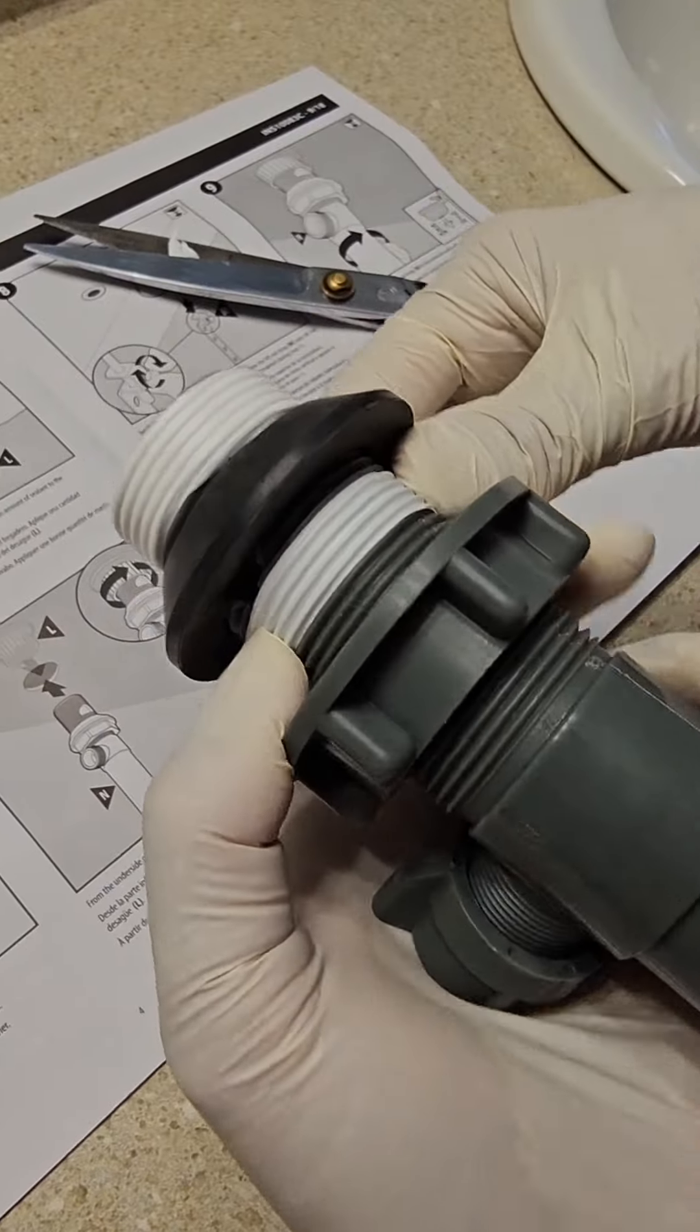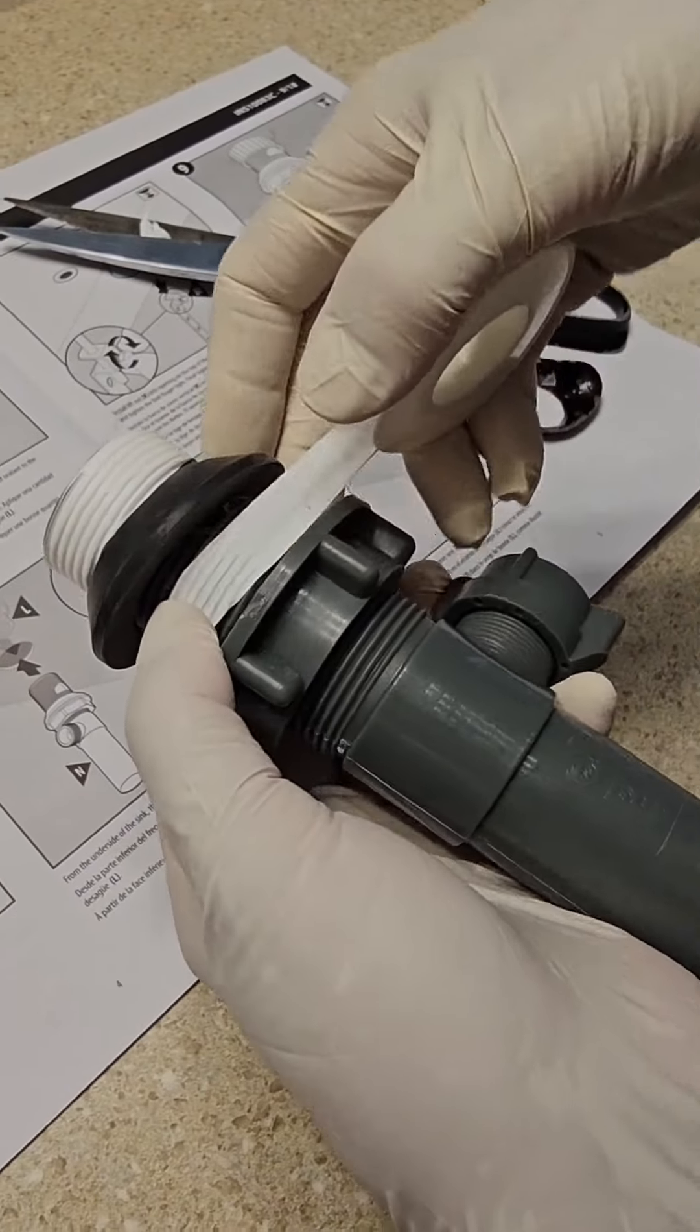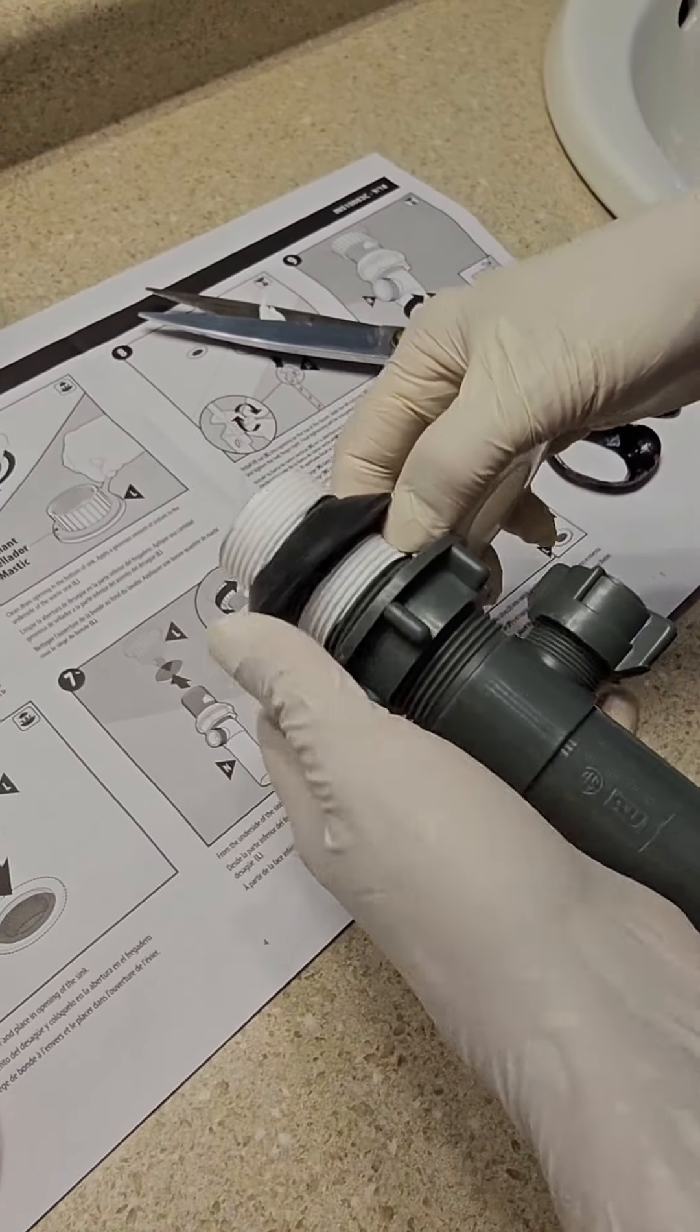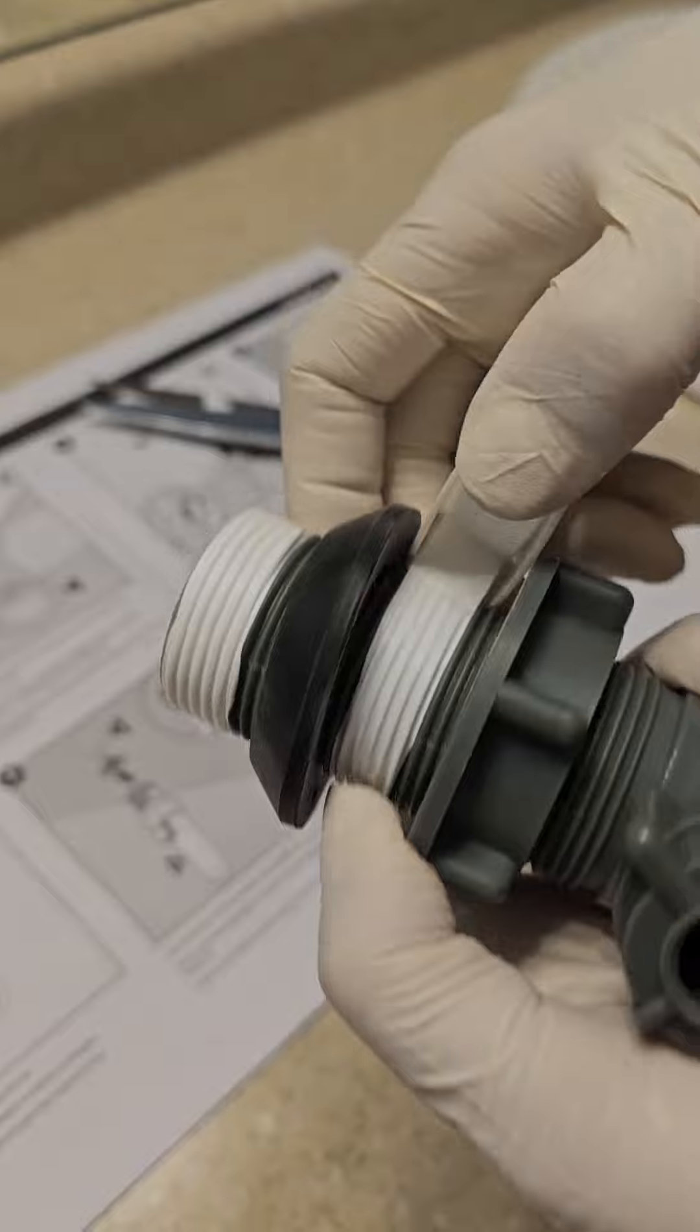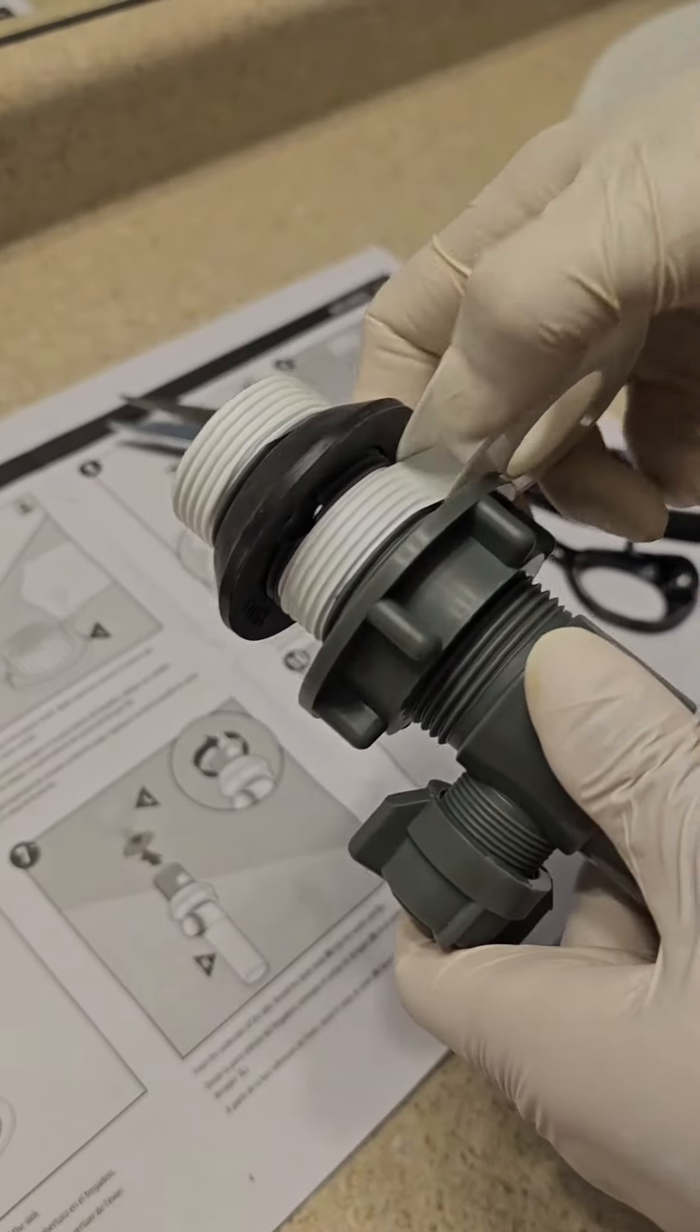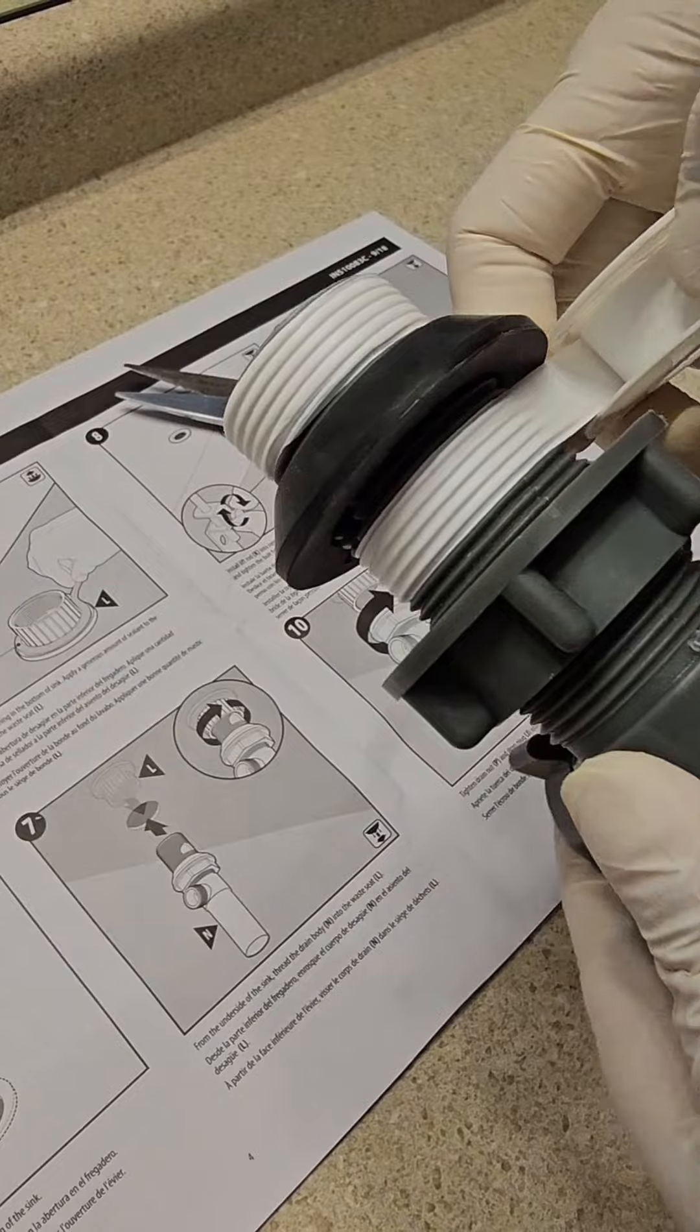For the bottom threads, wrap it tightly counterclockwise. Do not use plumber's putty because it is petroleum based so it will cause the rubber to get brittle and crack.